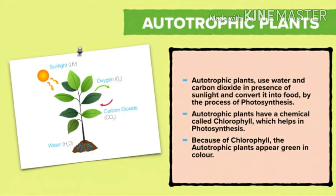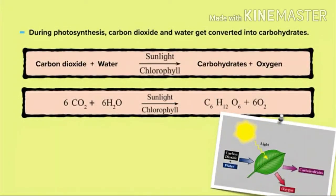Autotrophic plants use water and carbon dioxide in the presence of sunlight and convert it into food by the process of photosynthesis. By the process of photosynthesis, plants prepare their own food. Autotrophic plants have a chemical called chlorophyll which helps in photosynthesis. Because of chlorophyll, autotrophic plants appear green in color. During photosynthesis, carbon dioxide and water get converted into carbohydrates.